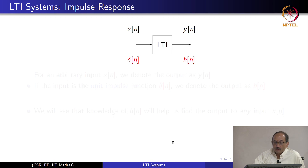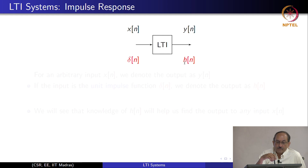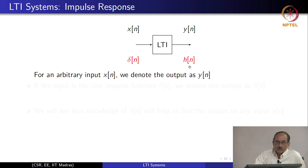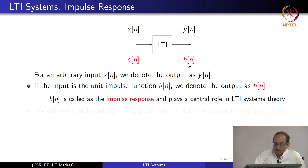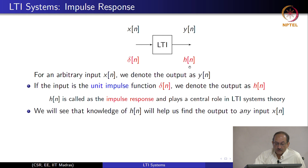This brings us to the impulse response. For an LTI system, if the input is x(n), the output is y(n). If the input happens to be delta(n), the output has a special name and is usually denoted by h(n). In continuous time it was denoted h(t), and this is called the impulse response. This impulse response plays a central role in LTI systems theory. If you have knowledge of h(n), you can get the output to any input x(n), which follows from both linearity and time invariance.